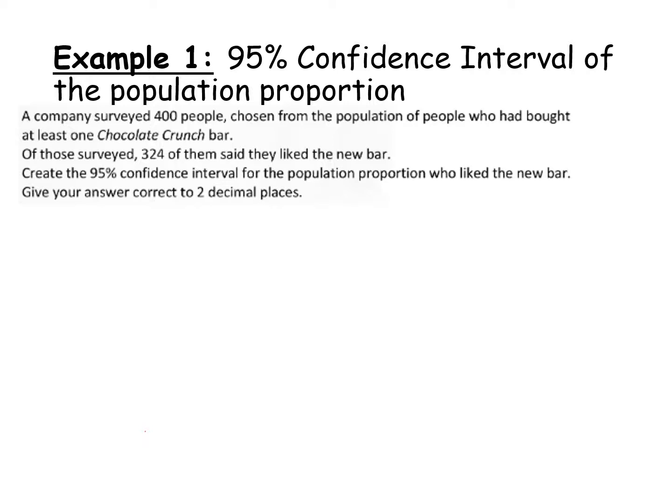Let's take an example. Just like all other questions, we're going to read through and label what we can. Be aware that when dealing with proportion, some numbers may not relate directly to a single value — for example, we may have to calculate p-hat. A company surveyed 400 people, so we know we're in a sample and N is 400. Of those surveyed, 324 liked the new bar. Now, 324 is not p-hat because p-hat is a proportion — a fraction or decimal less than 1 — so we'll need to calculate it.